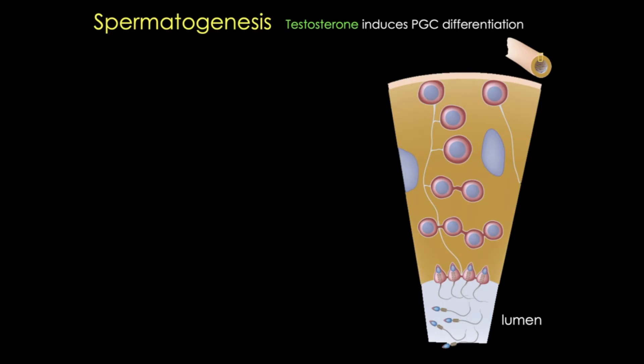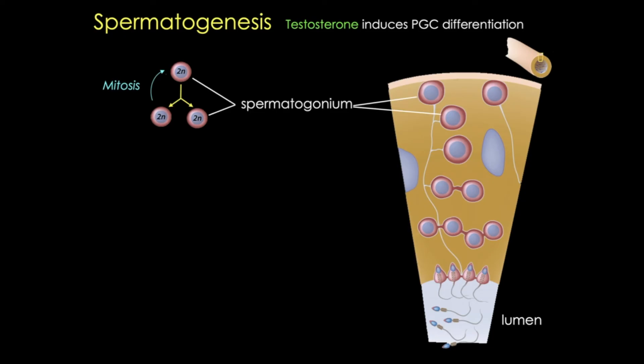Here you can see the spatial arrangement of the developing spermatozoa, from the most primitive to the most mature cells near the lumen. The primordial germ cells, sometimes called gonocytes, remain dormant from about week six of development until puberty. At puberty, there's a huge increase in testosterone. The tubules will differentiate, and the diploid primordial germ cells will start dividing by mitosis, and some of them will differentiate into spermatogonia, located immediately under the basement membrane surrounding the tubules.